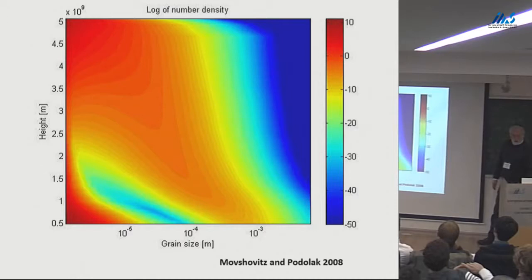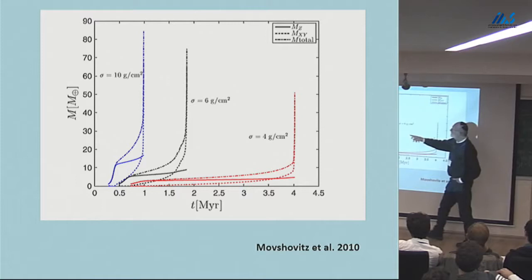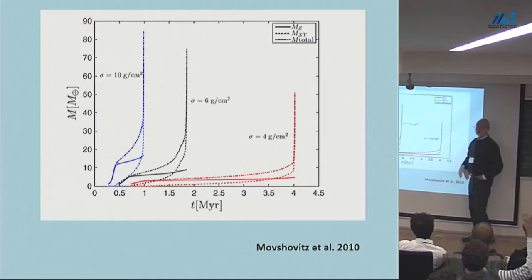When you take all that and put it into a real model of Jupiter, you find that you can shorten the time to a great extent. From 8 million years — the same model that took 8 million years earlier — you're getting in under a million years.